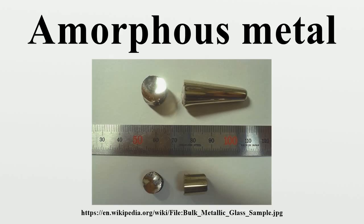MG60 Zinc 35 Calcium 5, rapidly cooled to achieve amorphous structure, is being investigated as a biomaterial for implantation into bones as screws, pins, or plates to fix fractures. Unlike traditional steel or titanium, this material dissolves in organisms at a rate of roughly 1 mm per month and is replaced with bone tissue. This speed can be adjusted by varying the content of zinc.